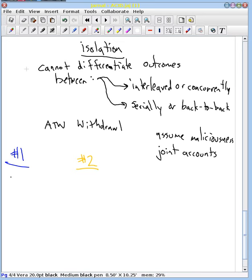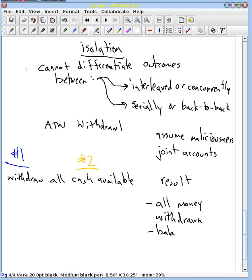And what we want them both to do is withdraw all cash available. So if we do this serially it's quite easy to see that the result should be all money withdrawn. You should have a balance of zero dollars and one request failure, whichever one happened second. Or you could also see that as being a zero dollar request and that succeeds. So that's what we want the result to be.